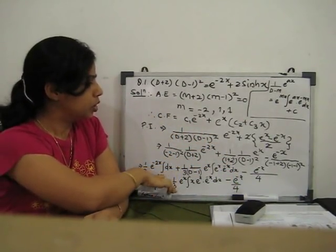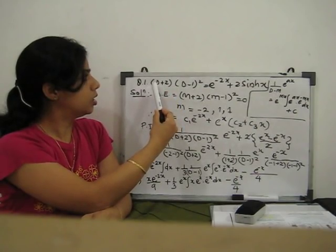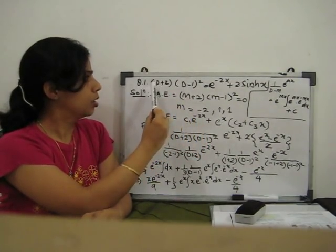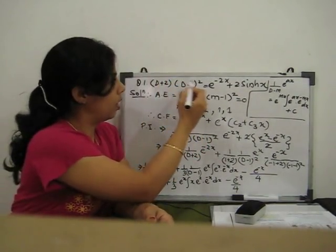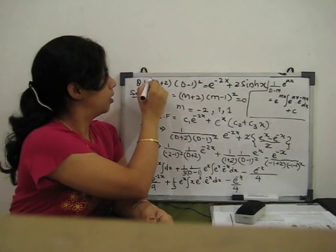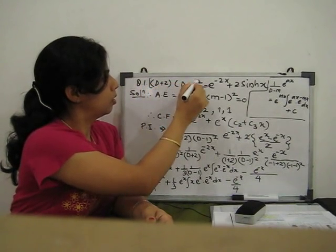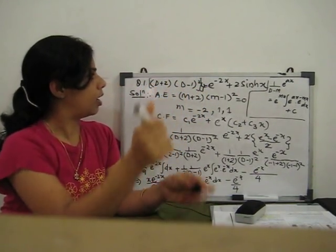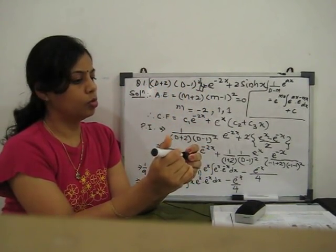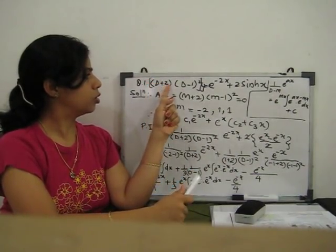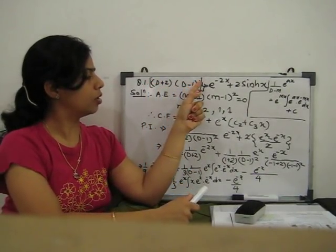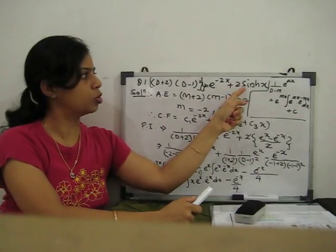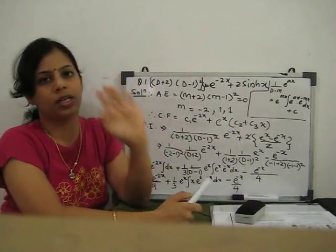We discuss: D is d/dx, and all are functions of y. The equation is (D + 2)(D − 1)² y = e^(−2x) + 2 sinh(x).